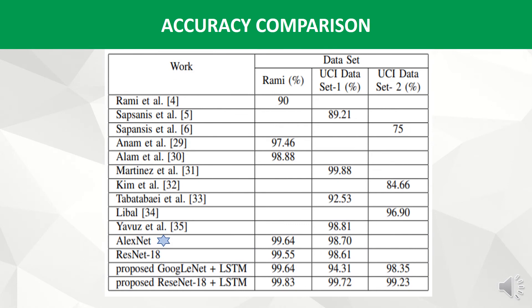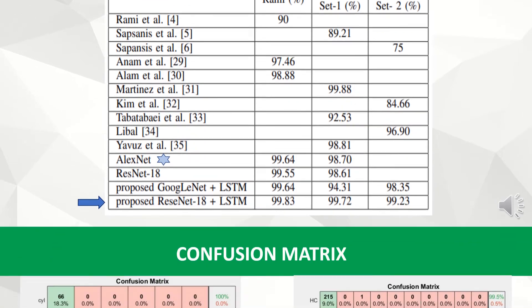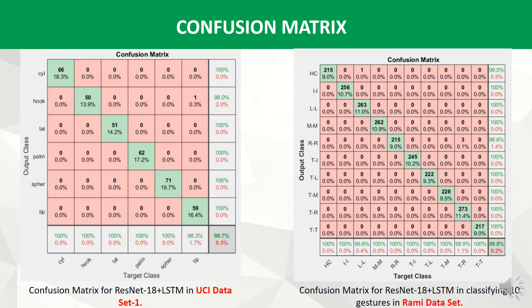From this table we can see the accuracy comparison of four methods with other methods applied to the same datasets. Modified ResNet-18 plus LSTM has achieved the highest accuracy of 99.83%, 99.73%, and 99.23% across all three datasets. We can also notice that LxNet also performed well on the Rami and UCI datasets. The confusion matrix shows that all gestures were classified with very few errors using ResNet-18 plus LSTM.